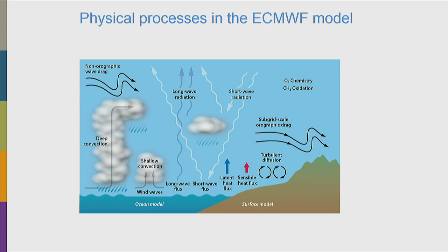We also parameterize physical processes in the ECMWF model. We know that a lot of physics happens on scales smaller than the resolved scales. With a 9 kilometer grid and an effective resolution of maybe 30 kilometers, you definitely need to parameterize clouds - both convective and stratiform - as well as radiation, turbulence, boundary layer processes, gravity waves, and even some atmospheric chemistry. There is continuous development of the parameterizations making them better and better.